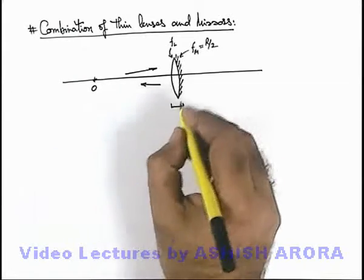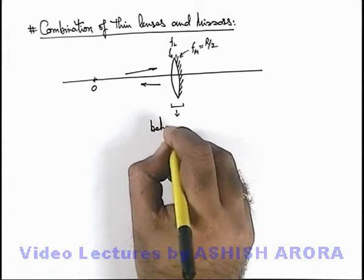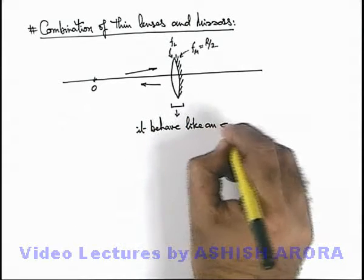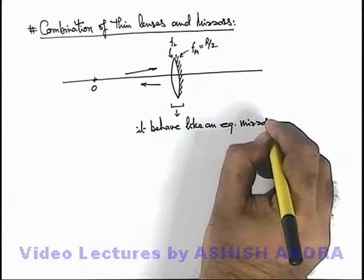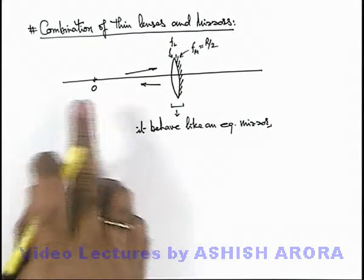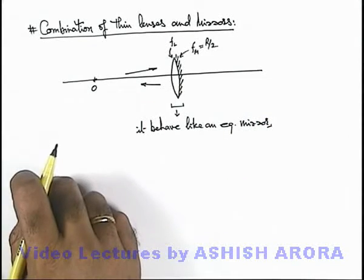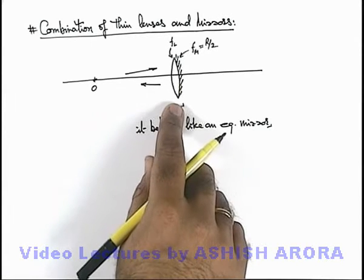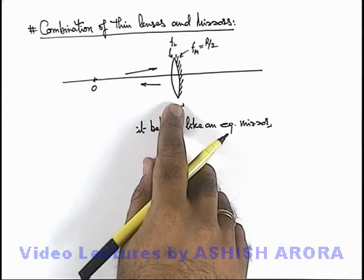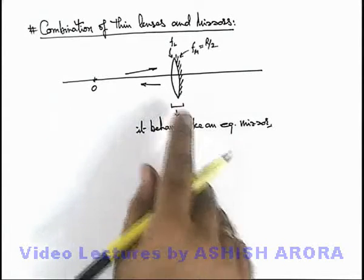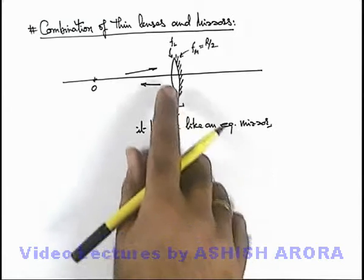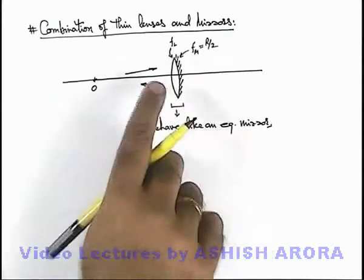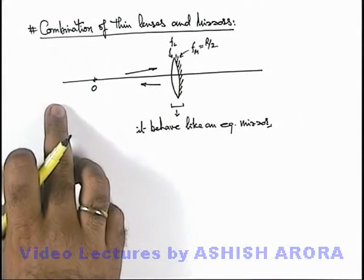We can directly state that this system will behave like an equivalent mirror, because finally the light rays are getting back into the same medium from which they were incident onto the optical device. If we are able to calculate the focal length of this equivalent mirror, we can directly use the mirror formula for the given object, rather than using the lens formula, then mirror formula, then again the lens formula for the light rays going back to the same medium.